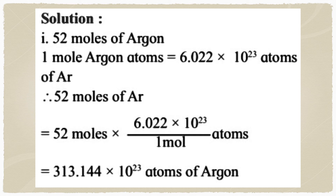For 52 moles of argon: 1 mole of argon contains 6.022 × 10²³ atoms. Therefore 52 moles will contain 52 × 6.022 × 10²³ = 313.144 × 10²³ atoms of argon. One mole always contains 6.022 × 10²³ molecules, atoms, or ions.